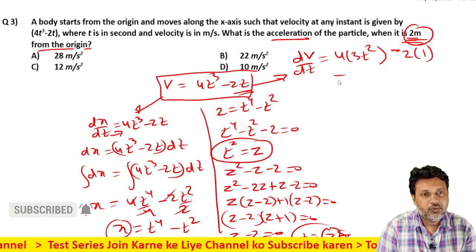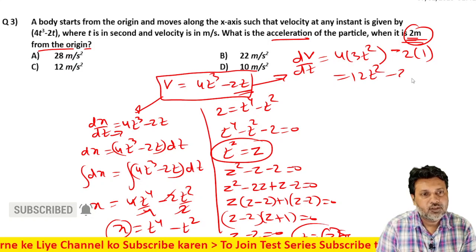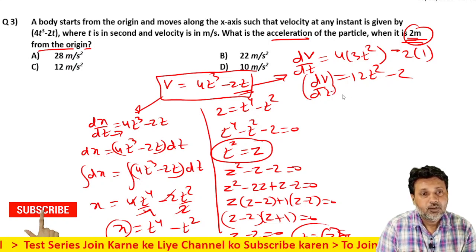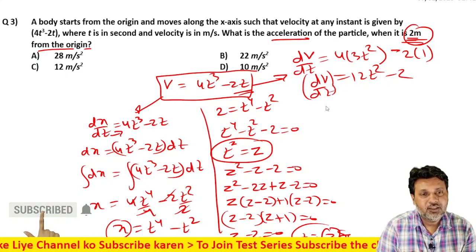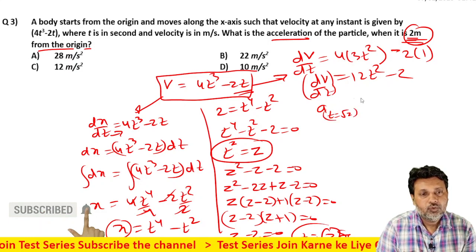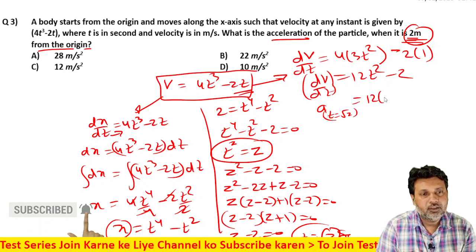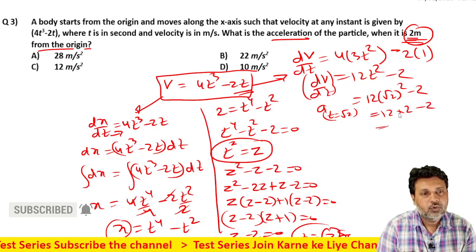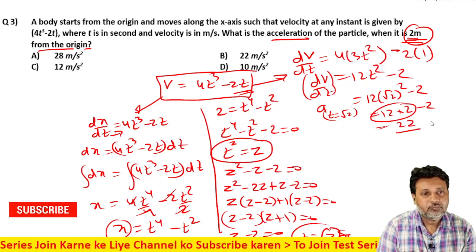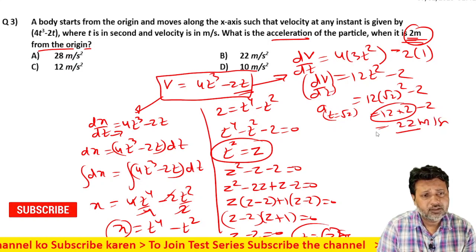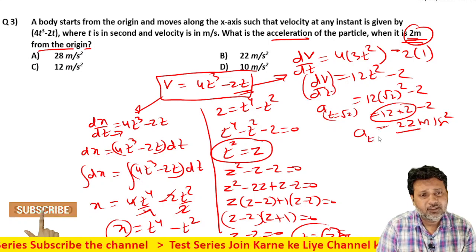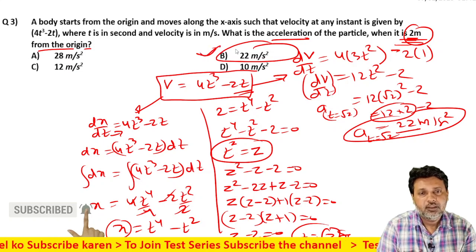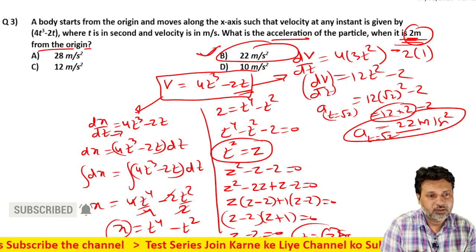Differentiate करने पर: a = 12t² minus 2. t = √2 पर acceleration निकालते हैं: a = 12(√2)² minus 2 = 12(2) minus 2 = 24 minus 2 = 22 m/s². तो acceleration होगा 22 meter per second square — यह option B है। चलो next question करते हैं।